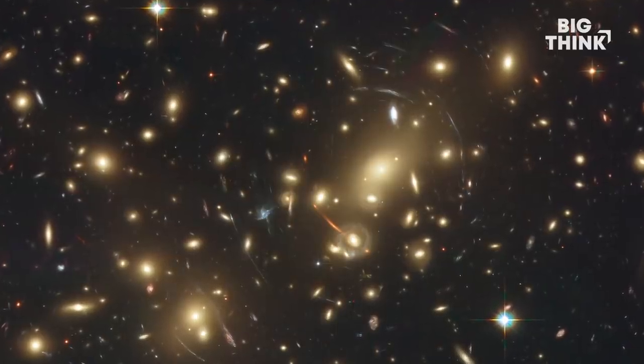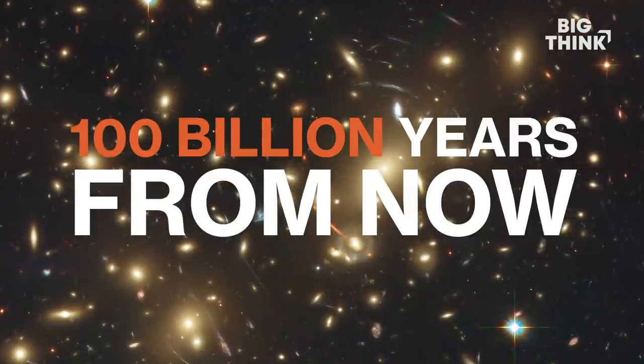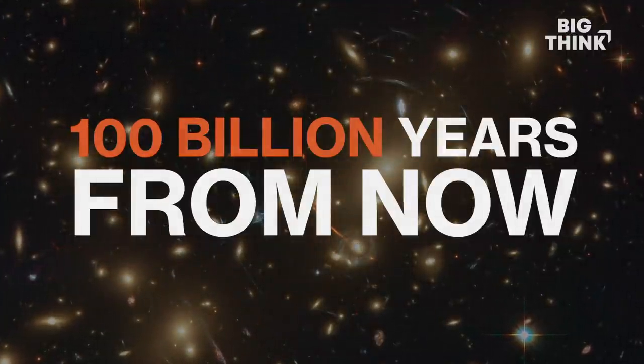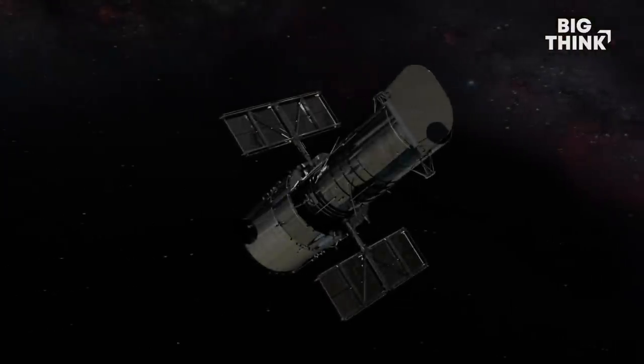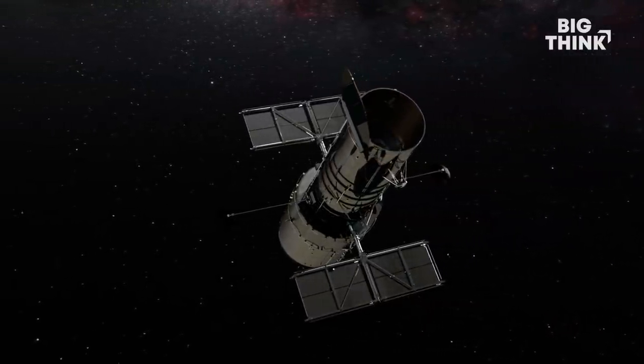So what happens in the heat death is that 100 billion years from now, the universe will have expanded so much so quickly that we will not be able to see distant galaxies anymore. Like our most powerful telescopes, when they look out into a dark part of the sky, we'll see nothing but darkness. Those amazing pictures from the Hubble Space Telescope of beautiful spiral arms, nothing. You won't see anything like that.